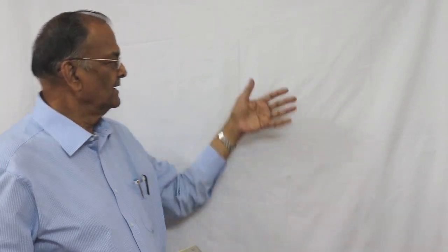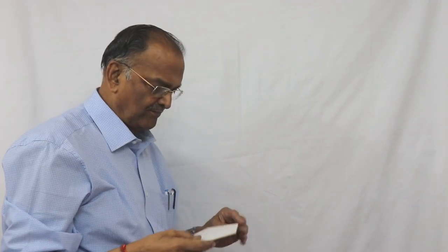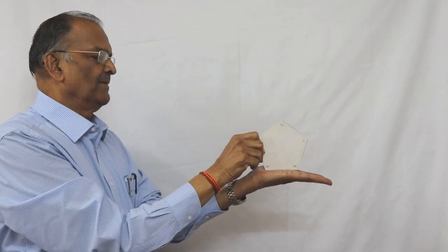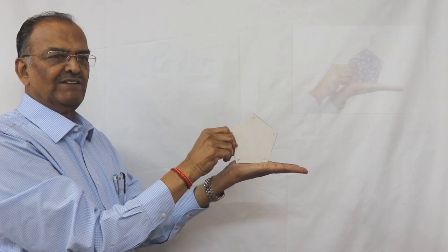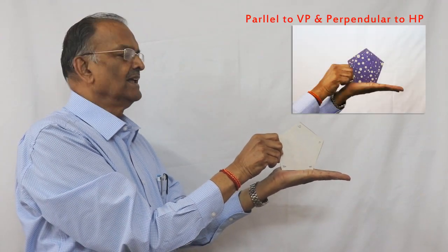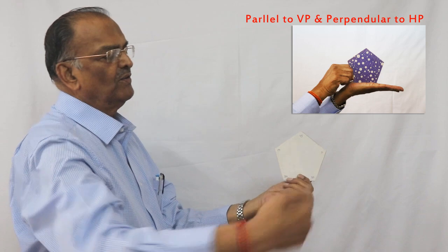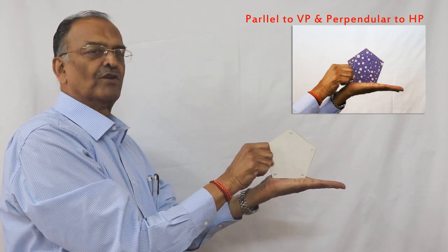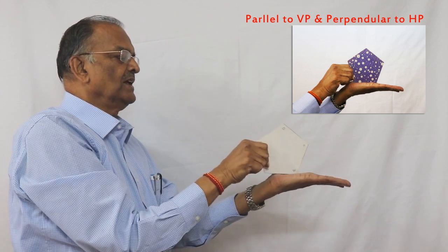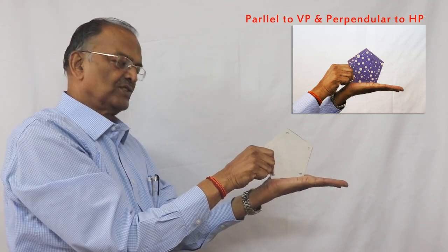Let me demonstrate the positions. I keep my hand as a horizontal plane and the background as a vertical plane. When the lamina is parallel to HP and perpendicular to VP, you can see the front view projected on VP gives a regular pentagon, while the top view projected on HP will be a line parallel to the XY line.